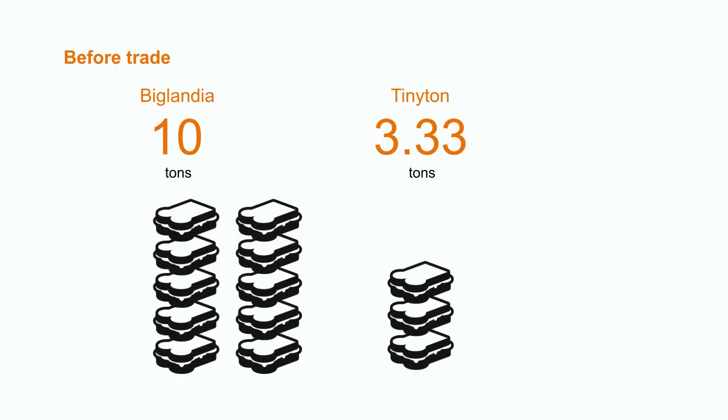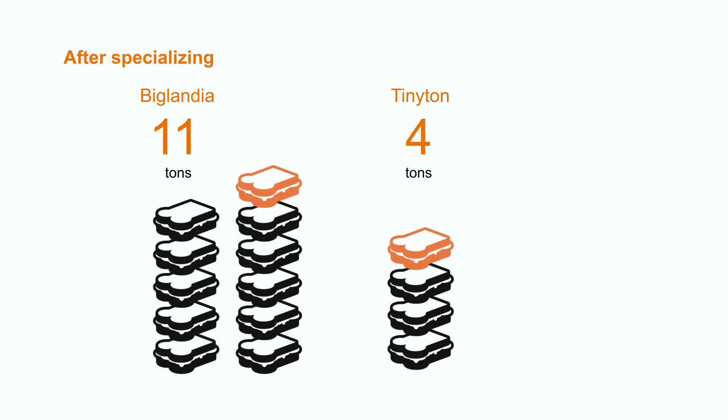So, before trade, Biglandia only got 10 tons of sandwiches, and Tinyton only got 3.33 tons of sandwiches. But after specializing and trading, Biglandia got 11 tons of sandwiches, and Tinyton got 4 tons of sandwiches. So, both countries are better off.